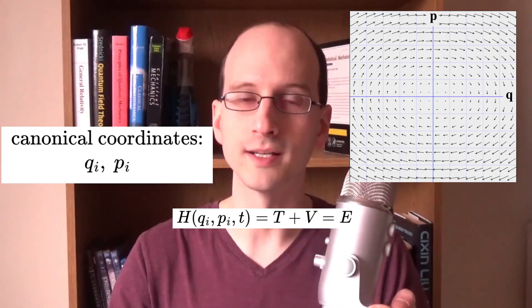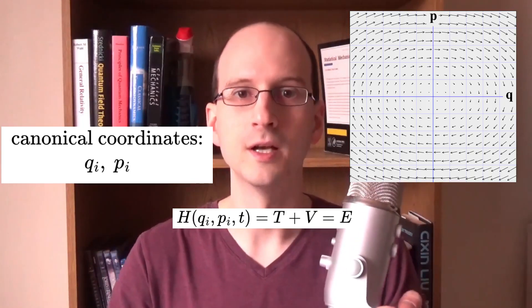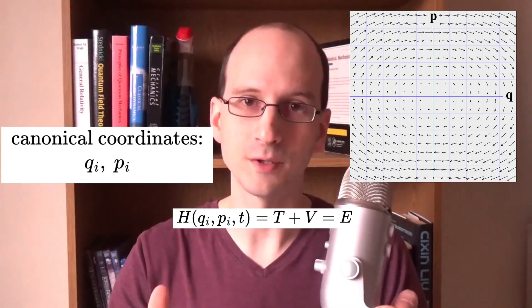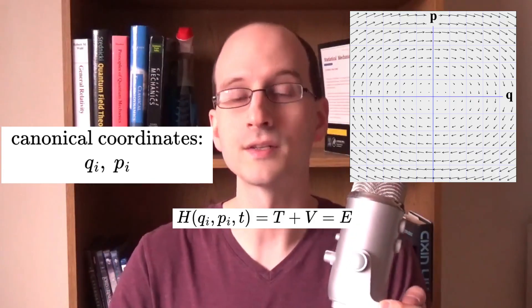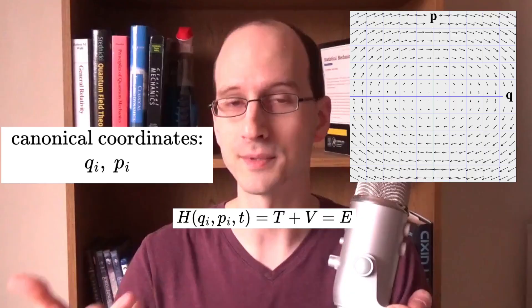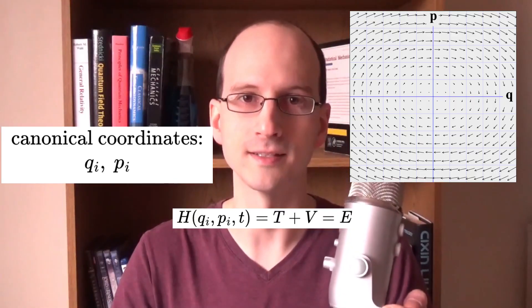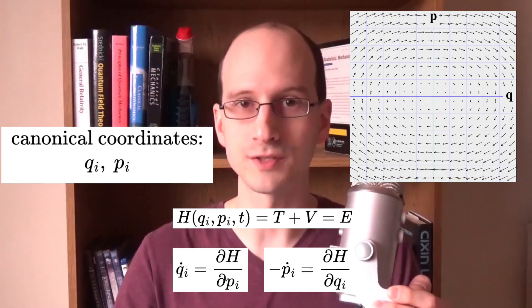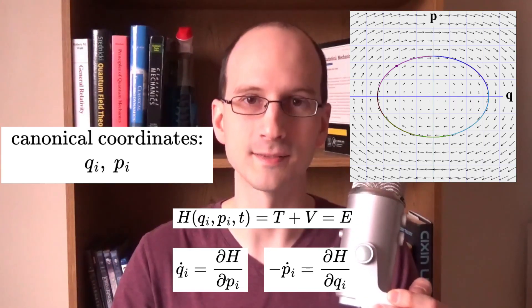If we shift a coordinate, it changes the Hamiltonian. Because energy is conserved, we must also change the momentum to keep the value of the Hamiltonian constant. The same is true the other way. If we shift the momentum, we must also shift the position to keep the Hamiltonian constant. These are the Hamilton equations of motion, and they show us how a system changes over time on a path through its phase space.